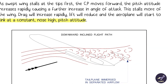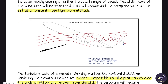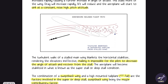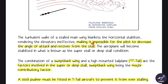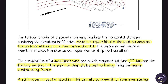In T-tail aircraft where the elevator and horizontal stabilizer are at the top of the tail, it is mandatory to have a stick pusher. If the angle of attack increases beyond a certain limit, the stick pusher will automatically activate, pushing the pitch down and saving the aircraft from stalling. It is impossible for the pilot to decrease angle of attack and recover from the stall without it. The combination of swept-back wing and T-tail are the factors involved in super or deep stall — swept wing being the major contributory factor.